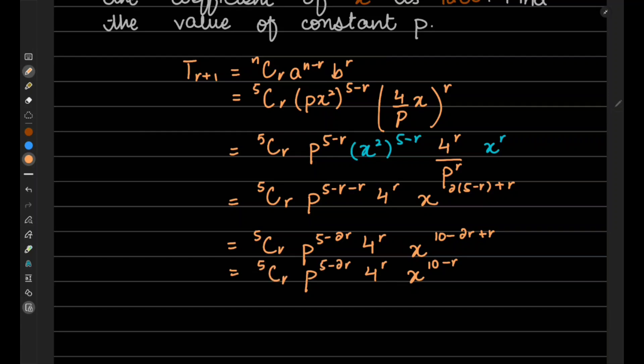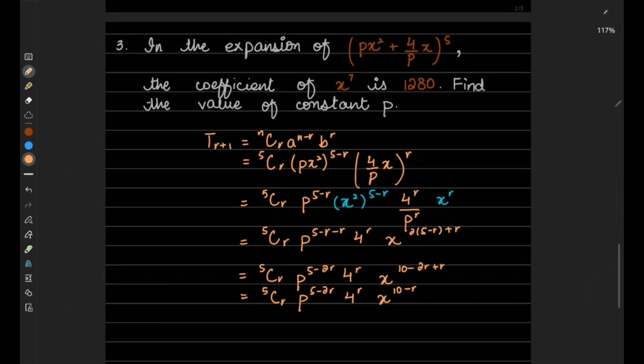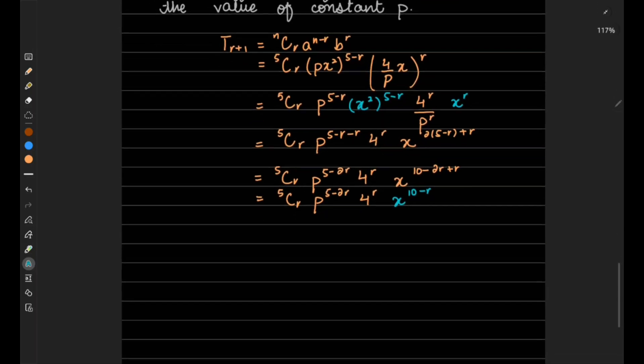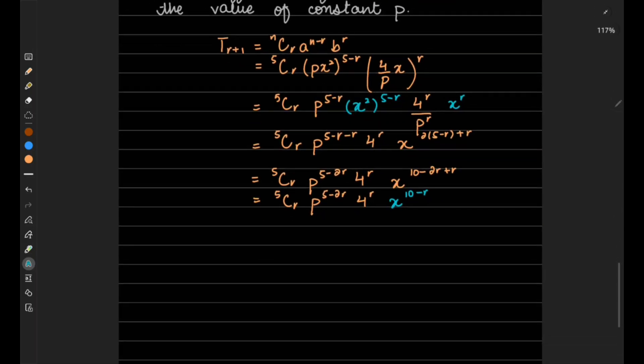So what do we need? Actually we need the coefficient of x^7. So what are we going to do? This is your x^(10-r) as the final power of your x. So what we will be doing is equating it with x^7 because we need that term that is having x^7.